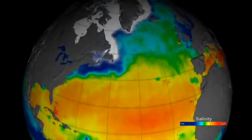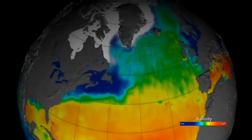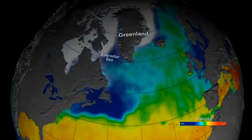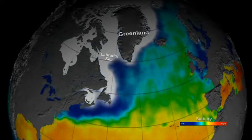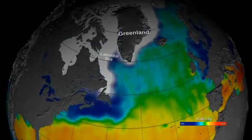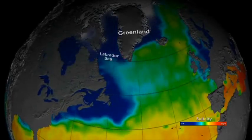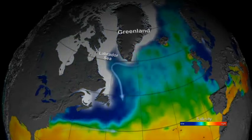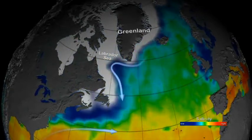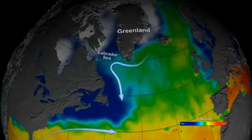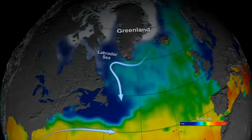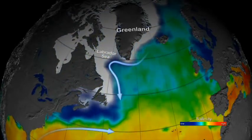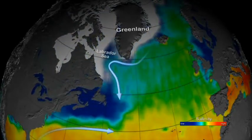At high latitudes, the seasonal melting of sea ice causes a sharp decrease in sea surface salinity. We see examples of this in the Labrador Sea and the coastal waters that surround Greenland. In spring and summer, surface currents transport the low salinity water south where it meets warmer and saltier water carried north by the Gulf Stream.